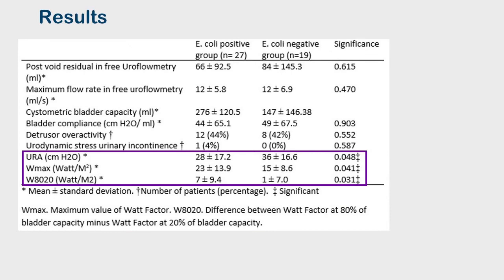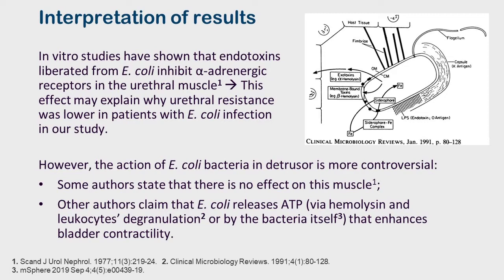None of the clinical variables showed significant differences between groups. Regarding the urodynamic variables, there were no significant differences in the post-void residual urine, maximum flow rate, or cystometric bladder capacity. The urethral resistance was significantly higher in the E. coli negative group, and the maximum value of watts factor and the difference between watts factor at 80% and 20% of bladder capacity were both significantly higher in the E. coli positive group.